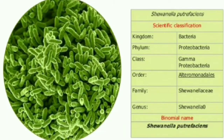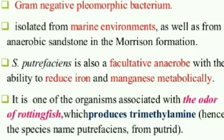Hello friends, welcome back to Biotech Simplified. Today we will discuss a bacteria called Shewanella putrefaciens. Shewanella putrefaciens is a gram-negative bacteria and a facultative anaerobe — meaning in the presence of oxygen they can use oxygen.